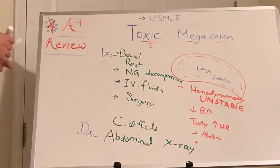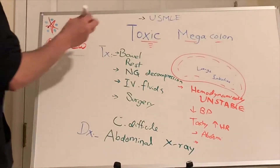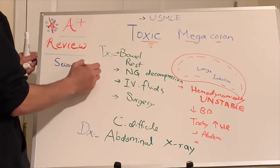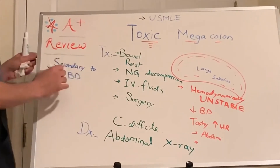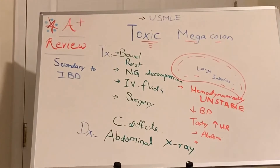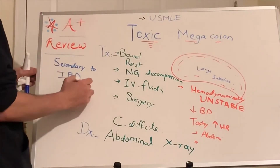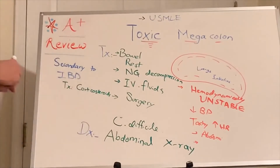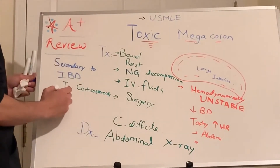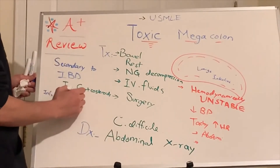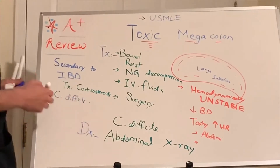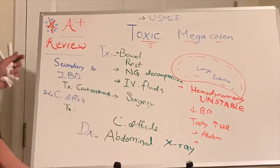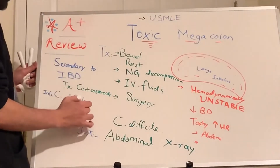Now, the main causes for USMLE questions: if the patient has toxic megacolon secondary to IBD, treat the IBD first with corticosteroids. If it is secondary to infection — which is C. diff — treat C. diff by giving oral vancomycin. If the patient is already unstable, give IV antibiotics.